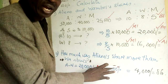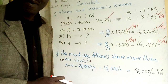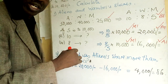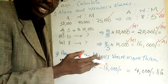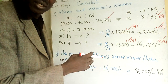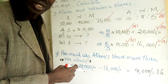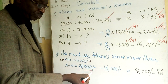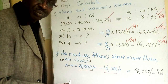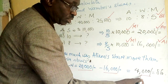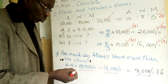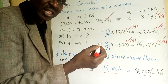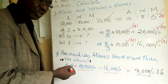How much was Atieno's share more than Wamboi's? We have seen Atieno got twenty thousand and Wamboi got sixteen thousand. The difference is four thousand, so Atieno got four thousand more than what Wamboi got.